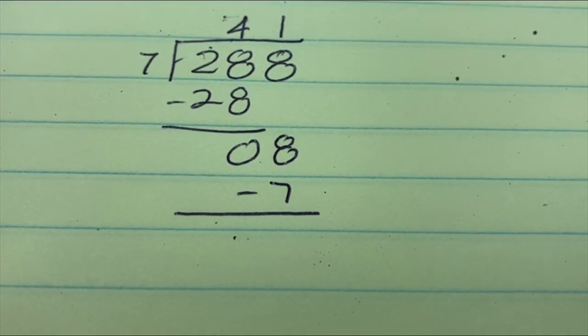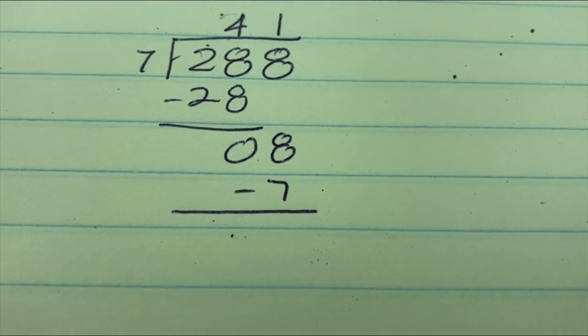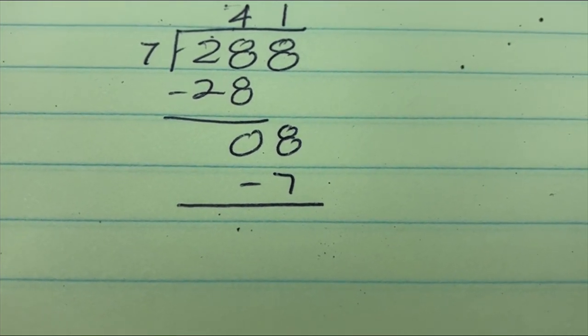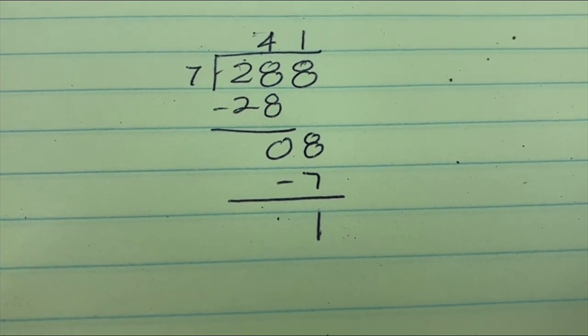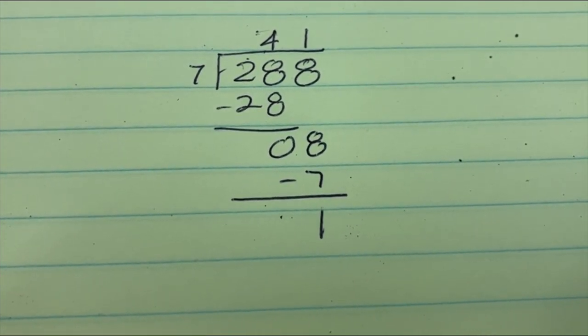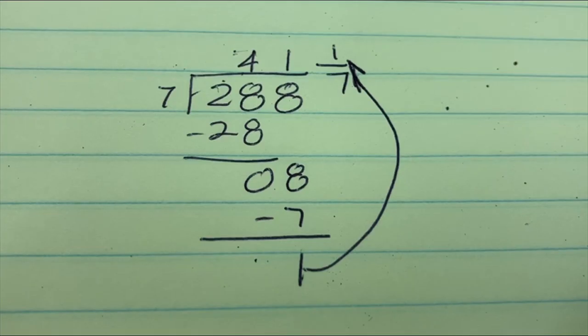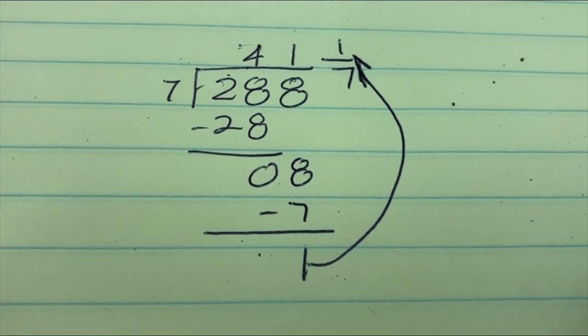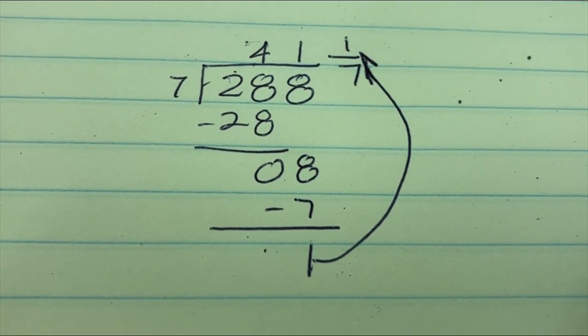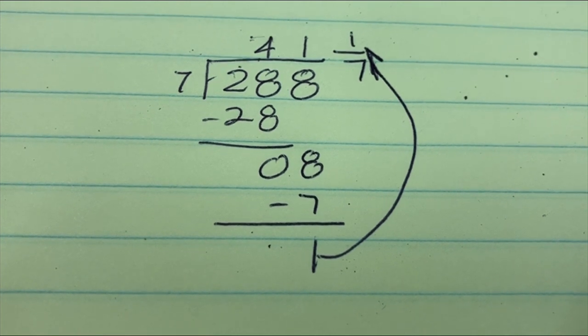So 7 times 1 was 7, and we had to subtract that from 8 down there at the bottom. We brought the 8 down. So how much is 8 minus 7? I'm thinking it's probably 1. Yep, we got that 1 left over, and we got to make it into a fraction. So that'll be 1 7th. Yep, that's the right answer. 288 divided by 7 is 41 and 1 7th.